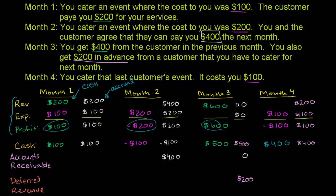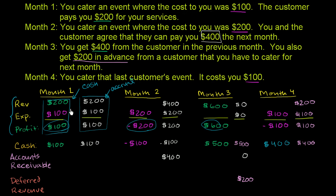This right here is our income statement for month one on a cash basis, and this is our income statement for month one on an accrual basis. When you look at either basis on month one, it gives you the same thing, so that's not so interesting. But let's go to month two.